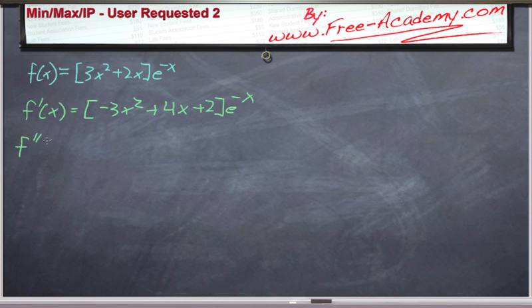And then we can do the same thing for our second derivative. We'll use our product rule, and then we'll use our chain rule on the e to the negative x. And I'm going to skip doing that, but again, it's something you can work out for yourself fairly easy. This will be 3x squared minus 10x plus 2, e to the negative x. So we have our first derivative and our second derivative.